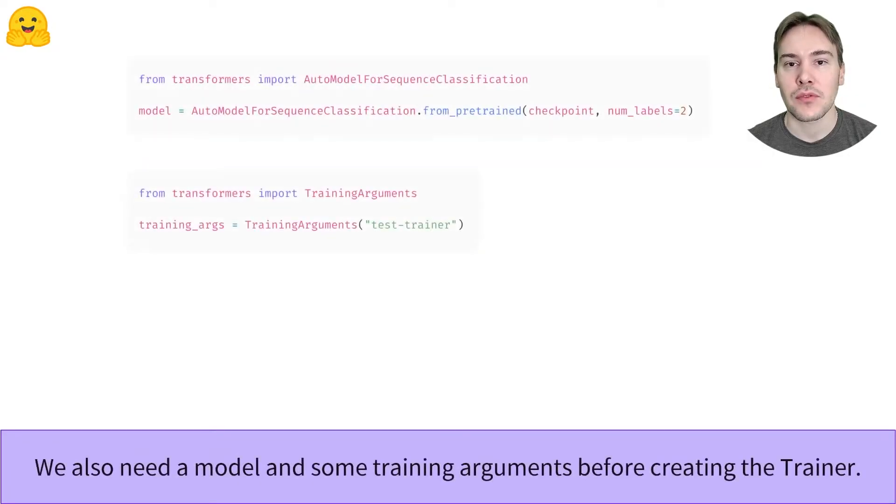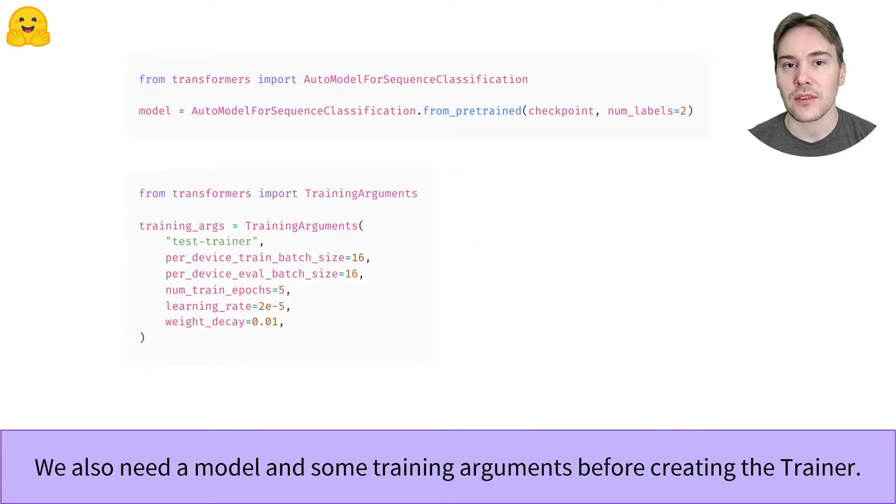The last step before creating the Trainer is to define our model and some training hyperparameters. We saw how to do the first in the model API video. For the second, we use the training arguments class. It only takes a path to a folder where results and checkpoints will be saved, but you can also customize all the other parameters that the Trainer will use: learning rate, number of training epochs, etc.